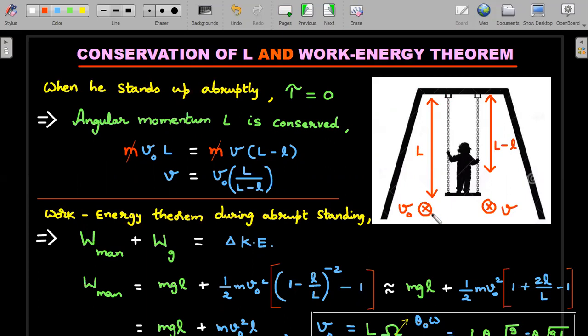What is the value of that angular momentum? If v is into the board, the cross product of these two would produce m v naught L. Immediately after standing up at the same position, the value of the speed is v and the length has become L minus l. So m gets cancelled and you end up getting the new speed at the mean position in this manner.